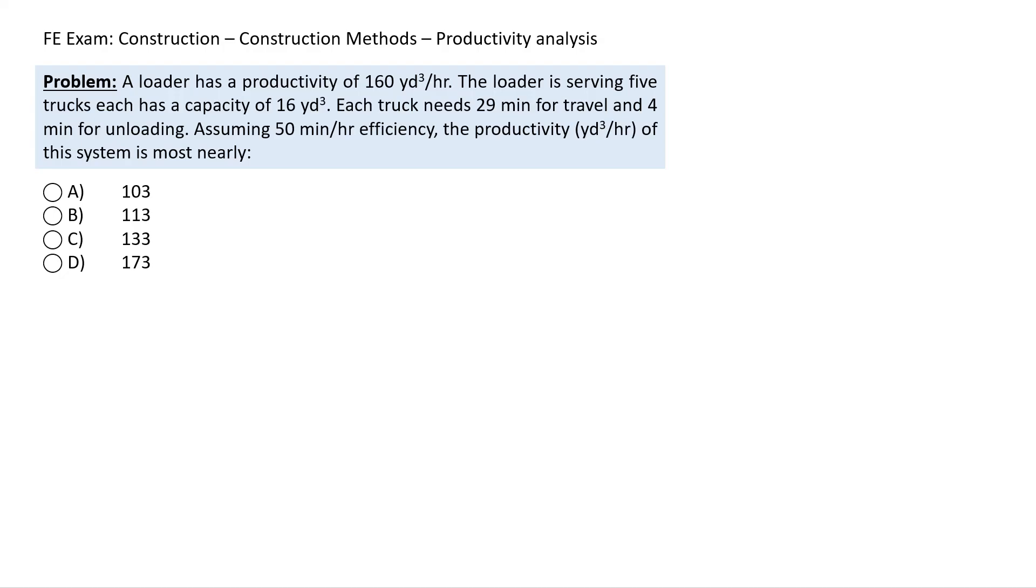The loader is serving five trucks, each has a capacity of 16 cubic yards. Each truck needs 29 minutes for travel and four minutes for unloading. Assuming 50 minutes per hour efficiency, the productivity in cubic yards per hour of the system is most nearly.